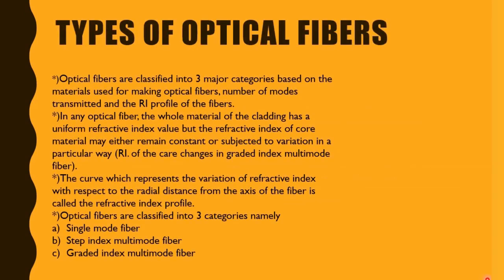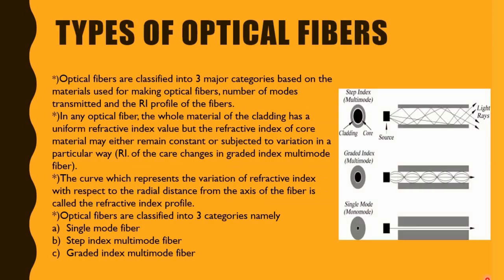Optical fibers are classified into three major categories based on: the material used for making the fiber, the number of modes transmitted, and the refractive index profile of the fiber. In any optical fiber, the cladding has a uniform refractive index, which is less than the core. However, the refractive index of the core material may either remain constant or vary in a particular way.